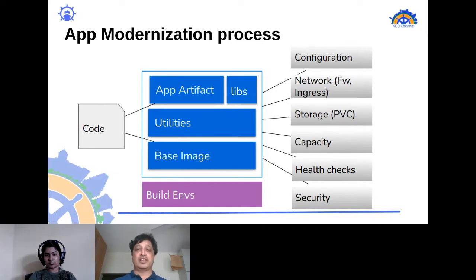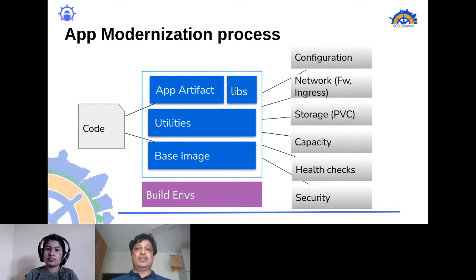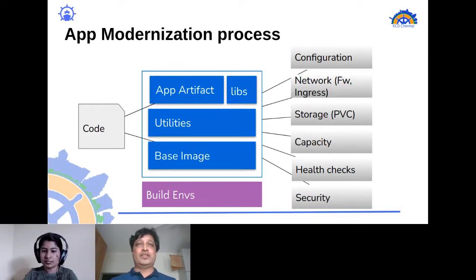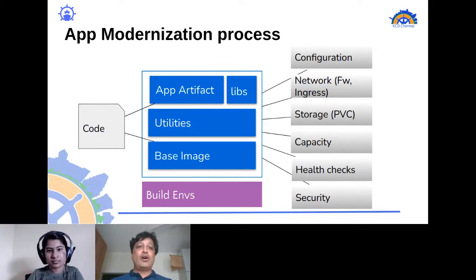Every application has its capacity requirements — how much CPU and memory it needs to run reliably — and security settings such as username, password, user ID, and group ID. Health checks to detect if the application is alive are important, along with sufficient storage, environment configuration such as GOROOT for Go or PATH variables, and proper port forwarding and ingress rules for networking.